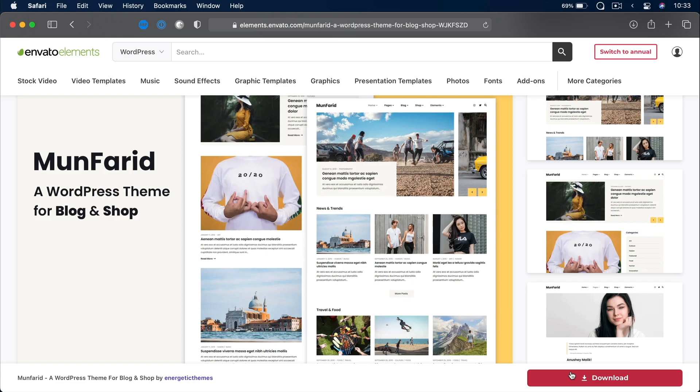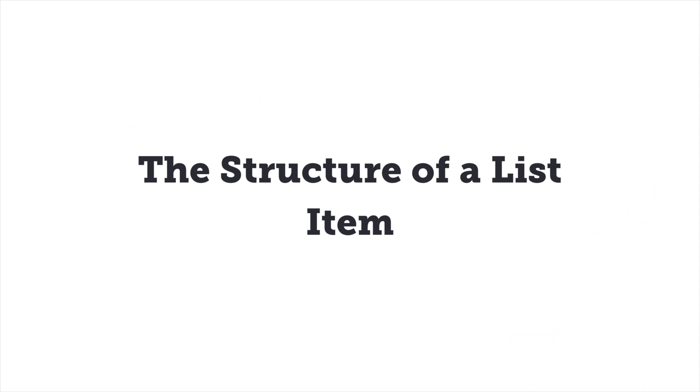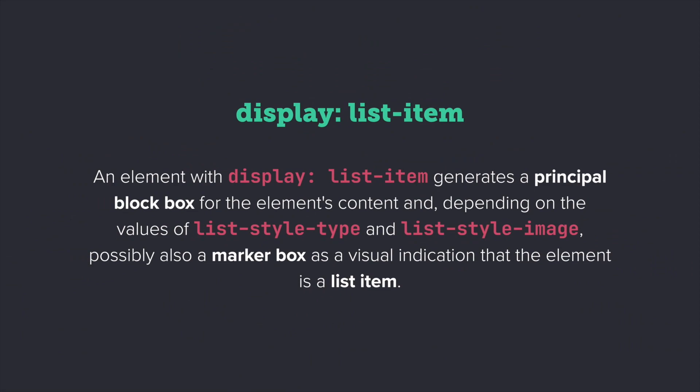All right, now back to the unicorns. Lists and list items have been around since the early days of CSS, and we've kind of just gotten used to them and don't pay much attention to their structure. Based on the official specification, an element with display list-item generates a principal block box for the element's content, and depending on the values of list-style-type and list-style-image, possibly also a marker box as a visual indication that the element is a list item.